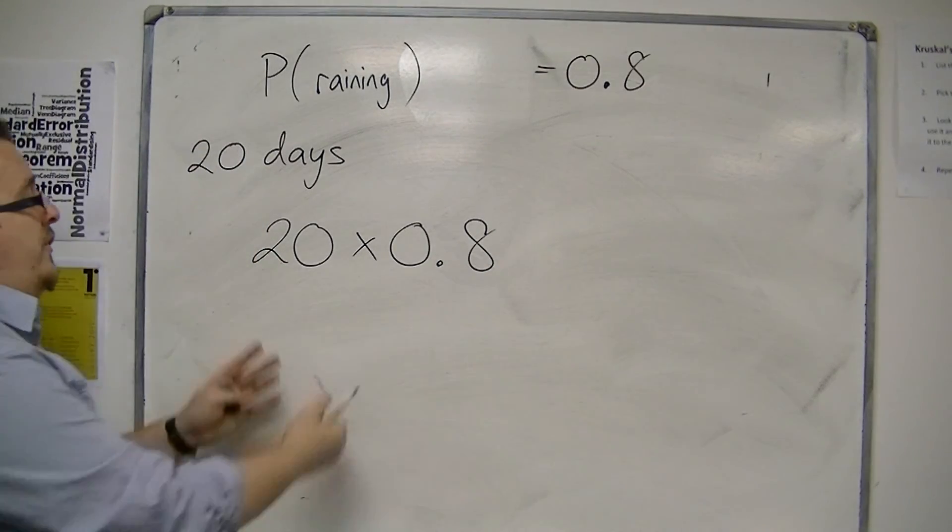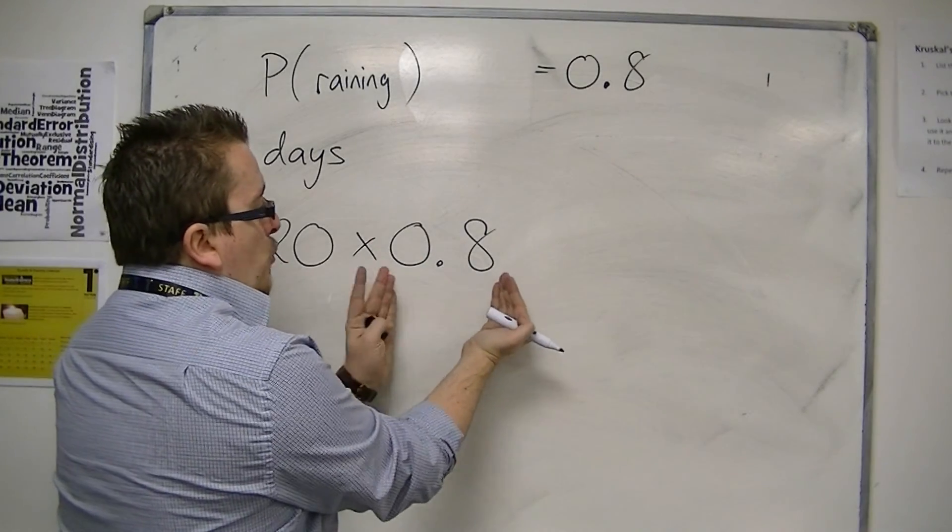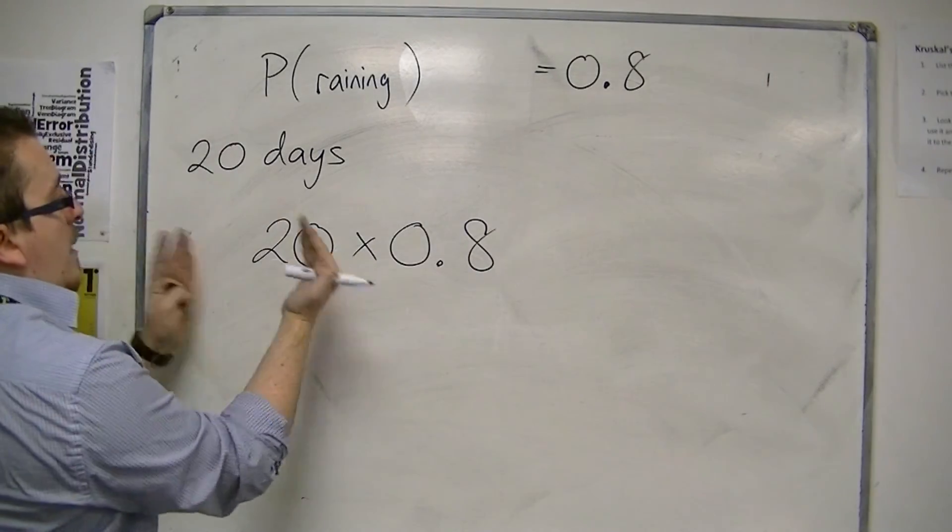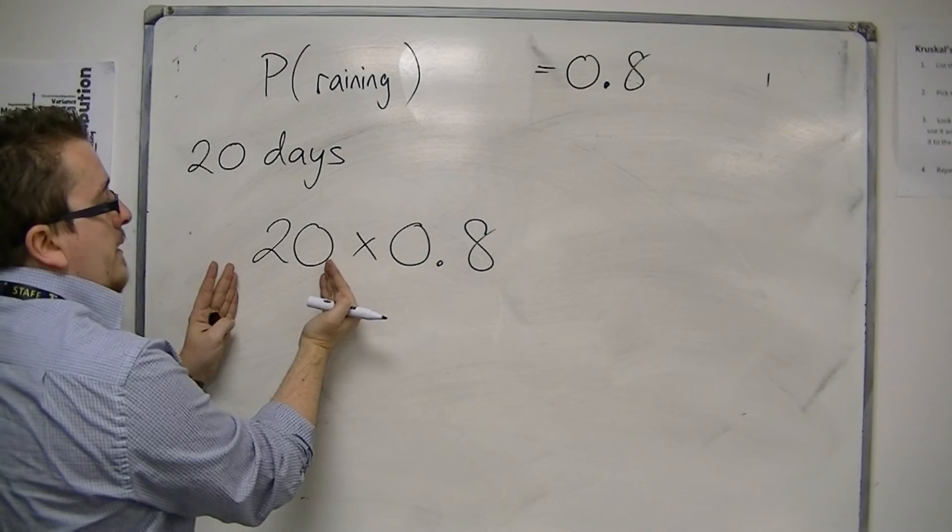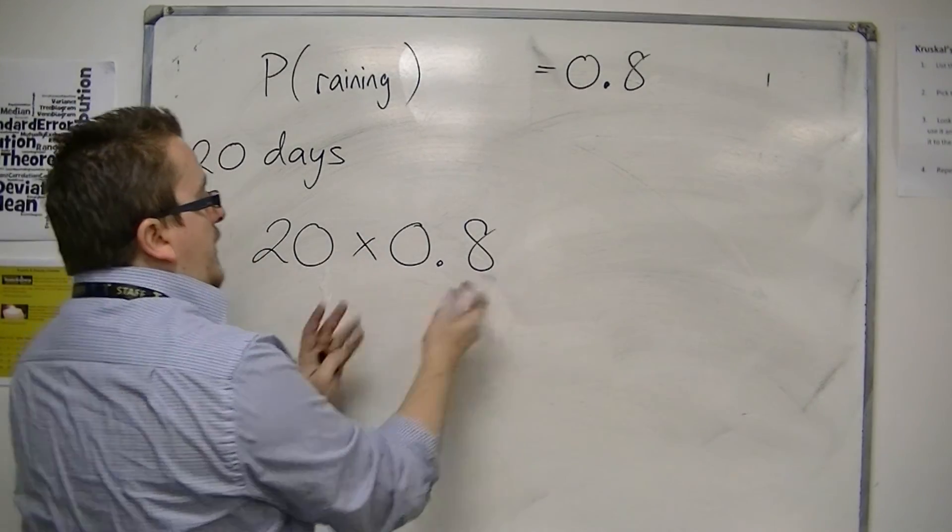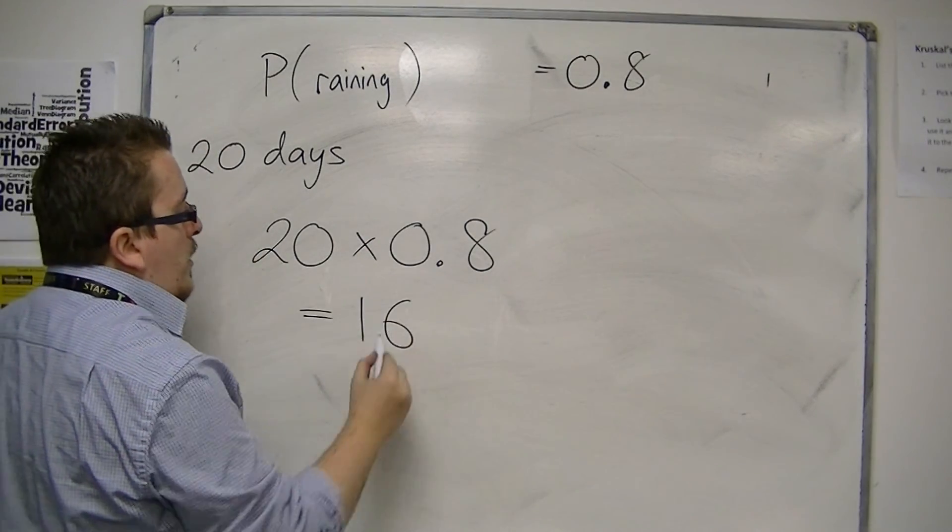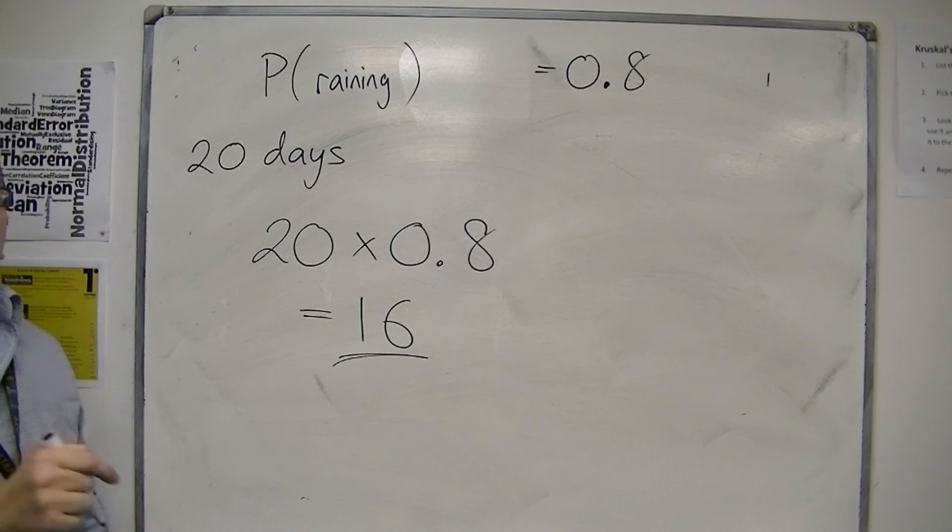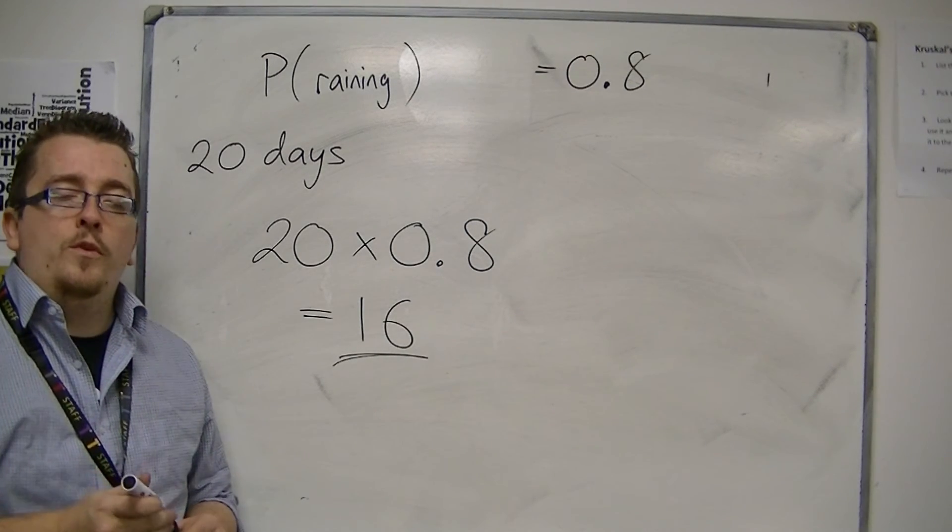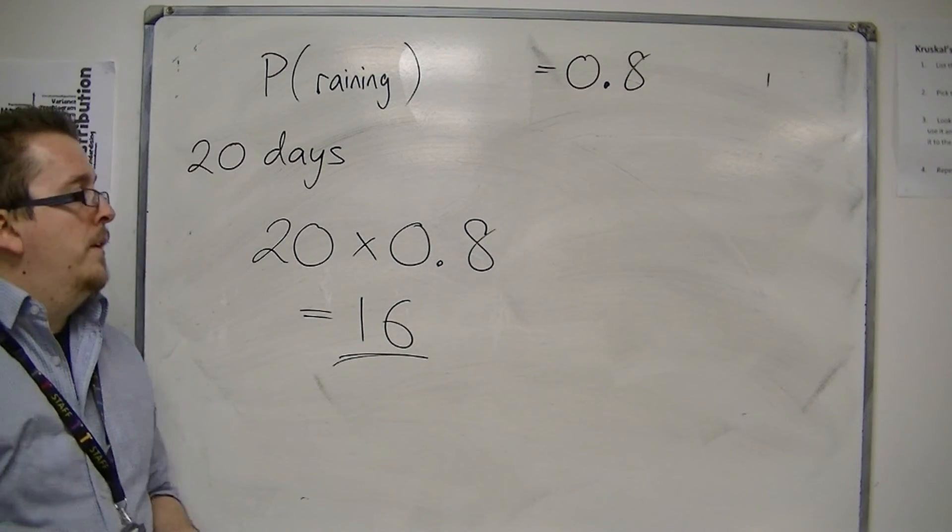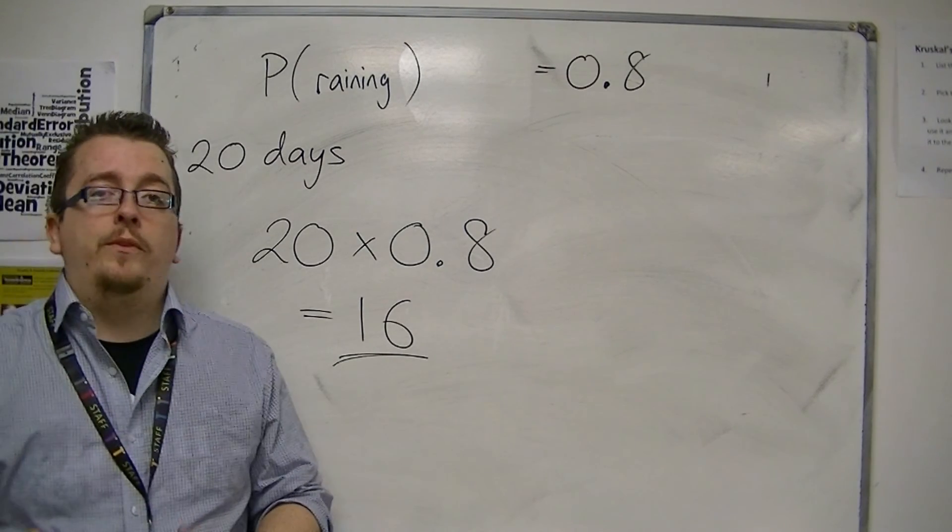You would get the number of days and multiply that by the probability of it raining. So this is like the ten thousand multiplied by the 0.415. It's the number that I want to look at multiplied by the probability. I would expect that out of the twenty days, sixteen would have rain. So this is how we work with relative frequency.